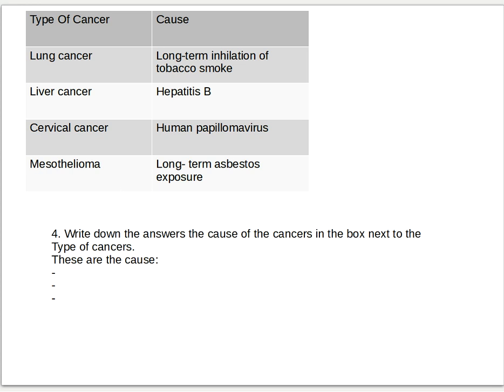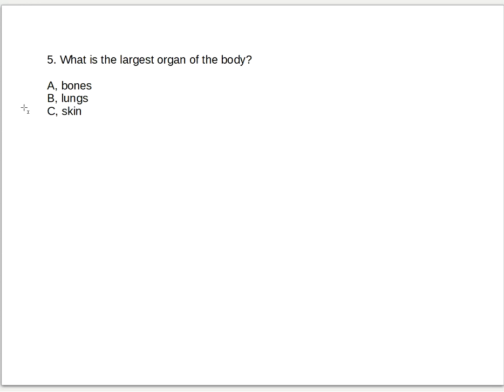So that's number four. Let's go to number five. This is the easy one. Number five question: what is the largest organ of the body? A, bones, B, lungs, and C, skin. This is very easy guys. Five seconds. And the answer is letter C, skin.